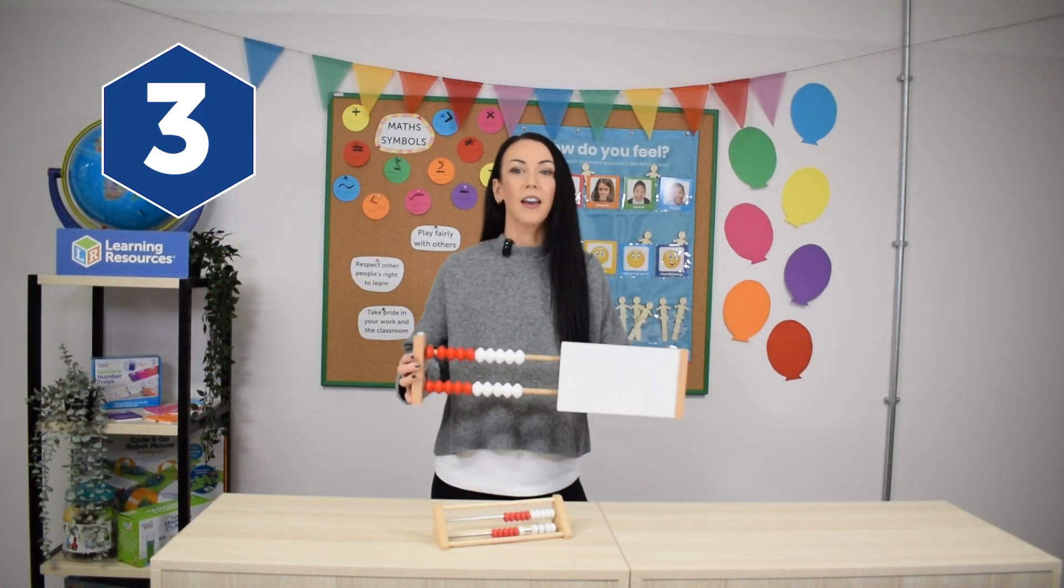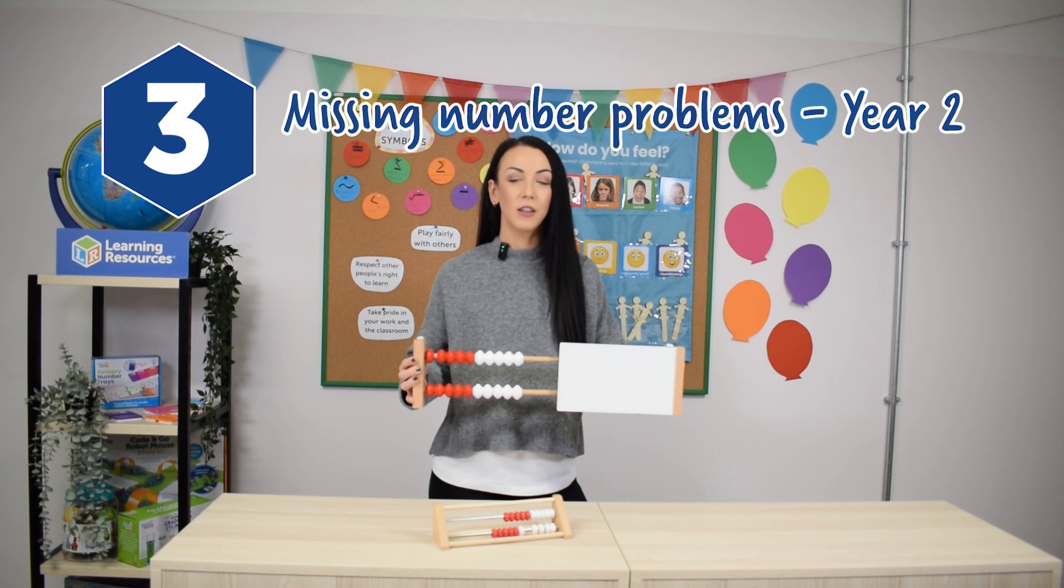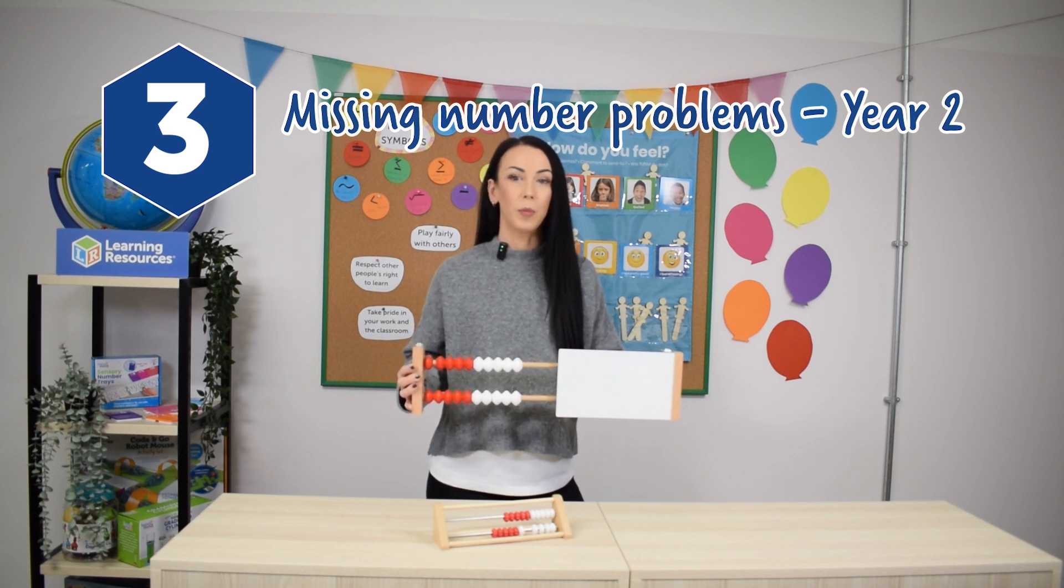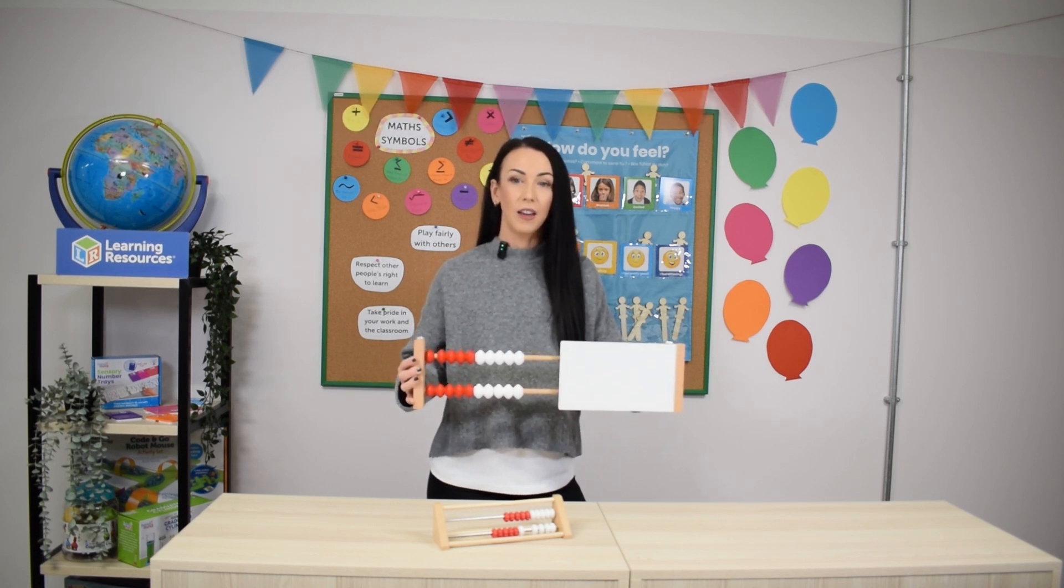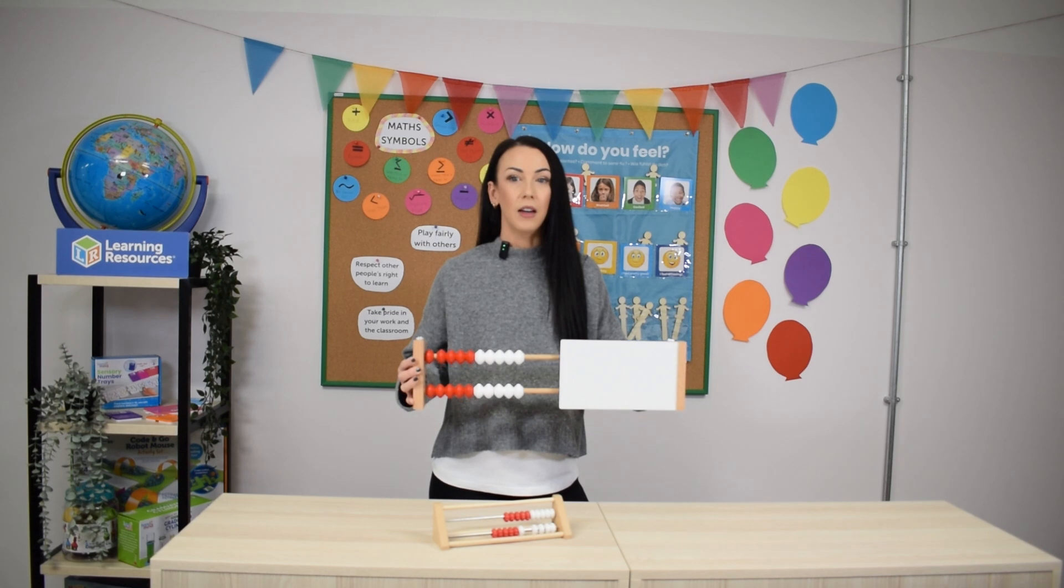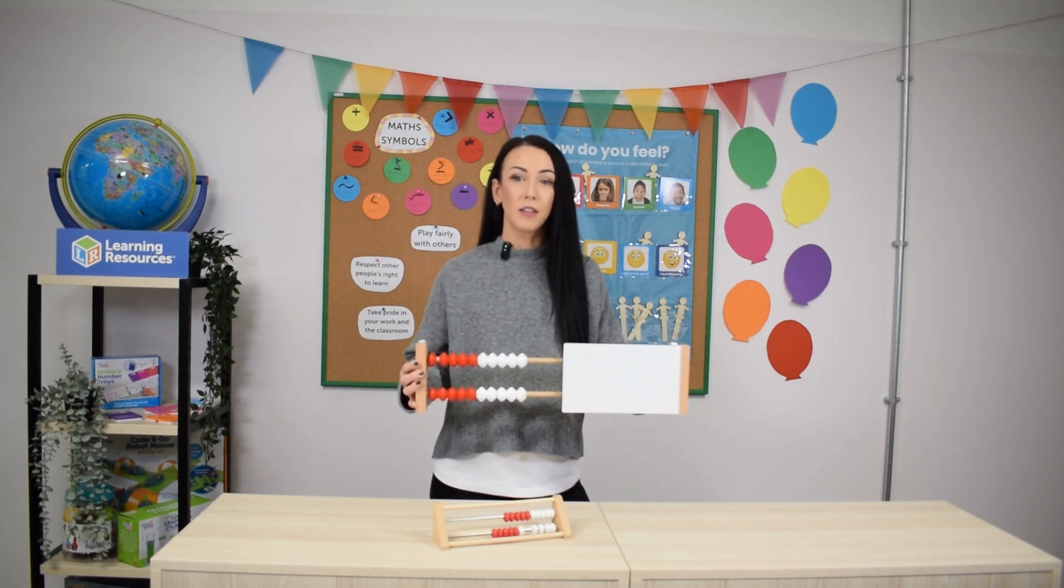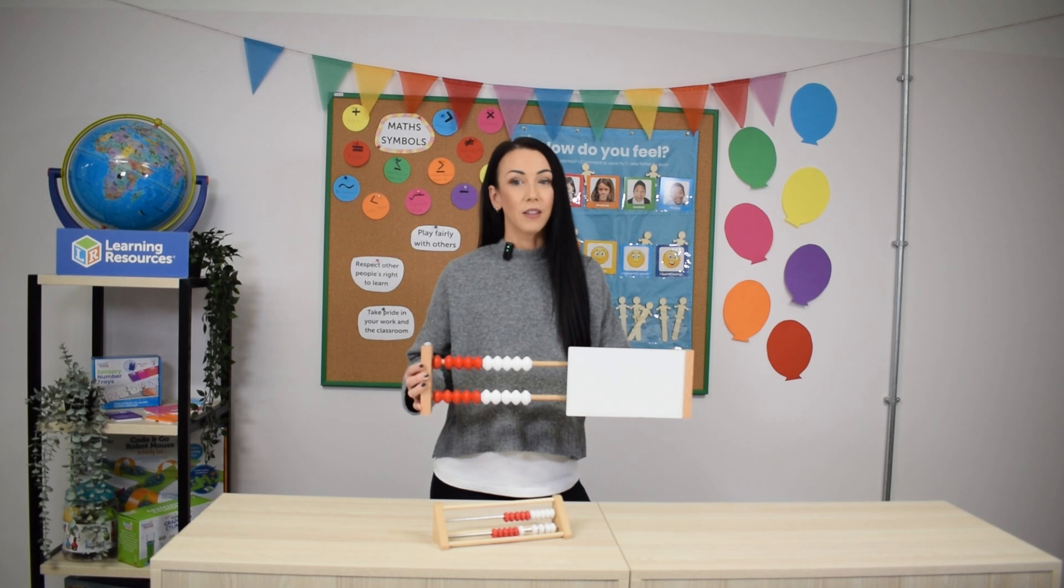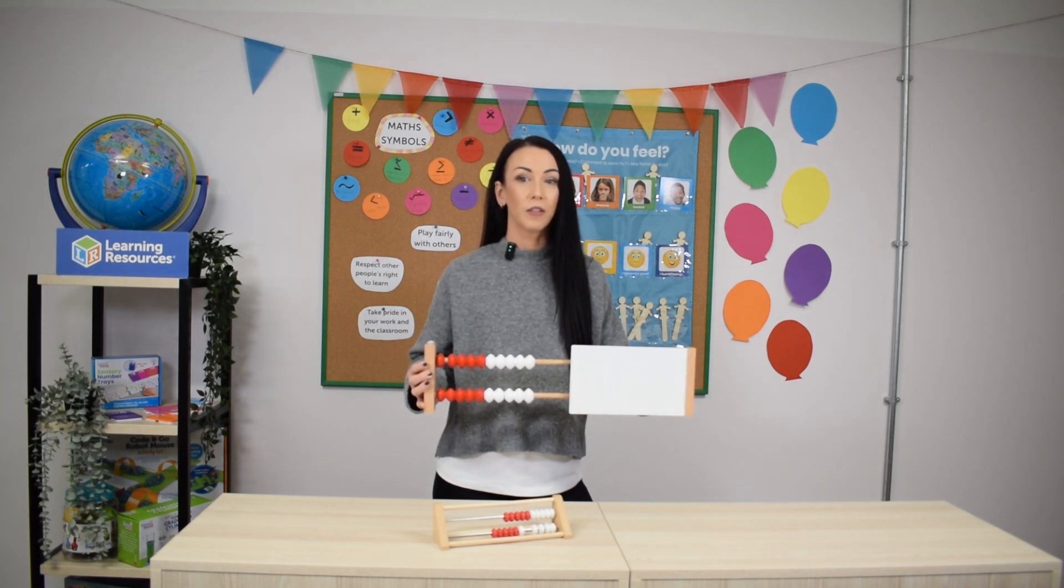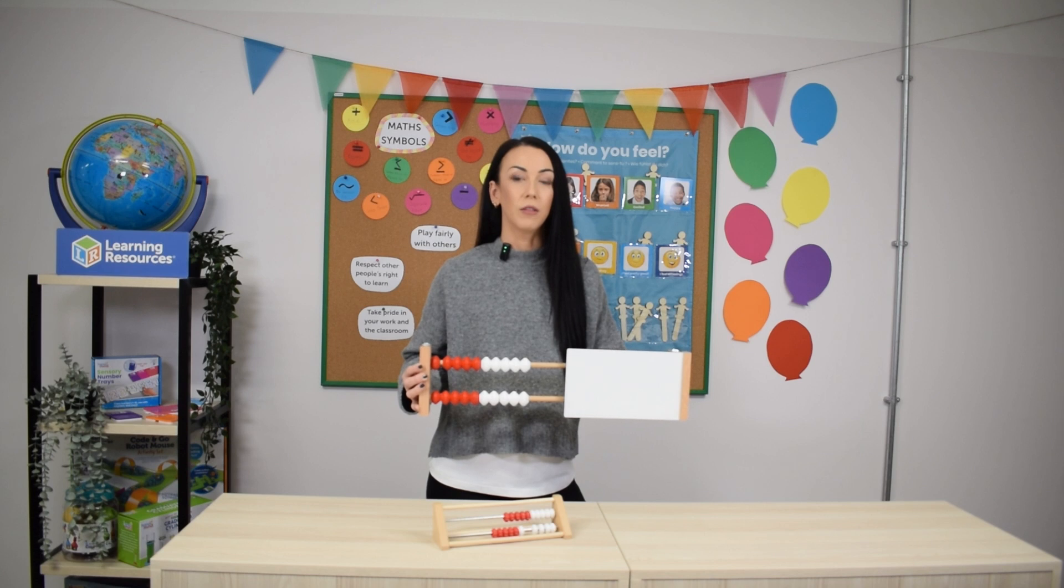Finally a great way for using the Rekenrek with year two children is missing number problems. This can be a tricky concept for children to grasp as it is posing calculations in a different way to what they are maybe used to and in my experience can really trick them up if they don't fully experience how to find the missing part with concrete resources first.